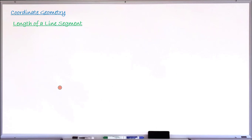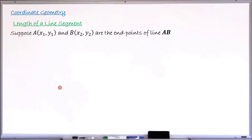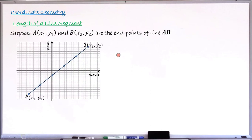To find the length of a line segment, let us consider a line segment AB. That line segment AB has endpoints A and B. The coordinates of endpoint A are (x₁, y₁) and the coordinates of endpoint B are (x₂, y₂). You can see it drawn on a Cartesian plane with coordinates of A as (x₁, y₁) and coordinates of B as (x₂, y₂).